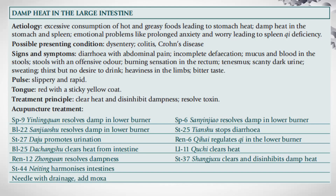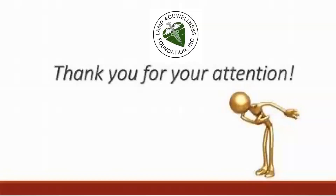Treatment principle: clear heat, disinhibit dampness, resolve toxin. For acupuncture treatment, we have Spleen 9 to resolve damp in the lower burner, as well as Bladder 22, Stomach 27 to promote urination, Bladder 25 to clear heat from the intestine, REN12 to resolve dampness, Stomach 44 to harmonize the intestines, Spleen 6 to resolve damp in the lower burner, Stomach 25 to stop diarrhea, REN6 to regulate qi in the lower burner, LI11 to clear heat, and Stomach 37 to clear and disinhibit damp heat. Needling uses the drainage method. Moxa can be added.